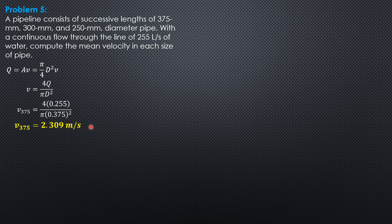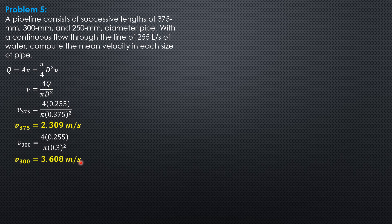For the 300 mm diameter pipe, velocity is 4 times 0.255 over pi times 0.3 squared, which equals 3.608 meters per second.